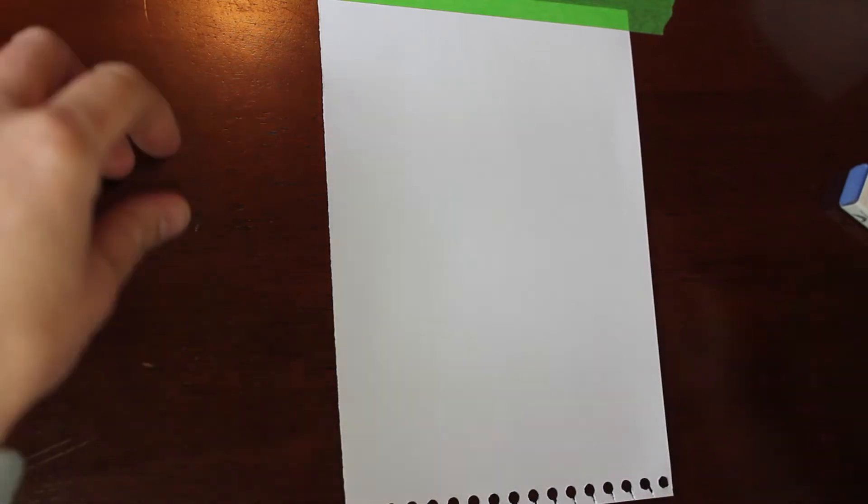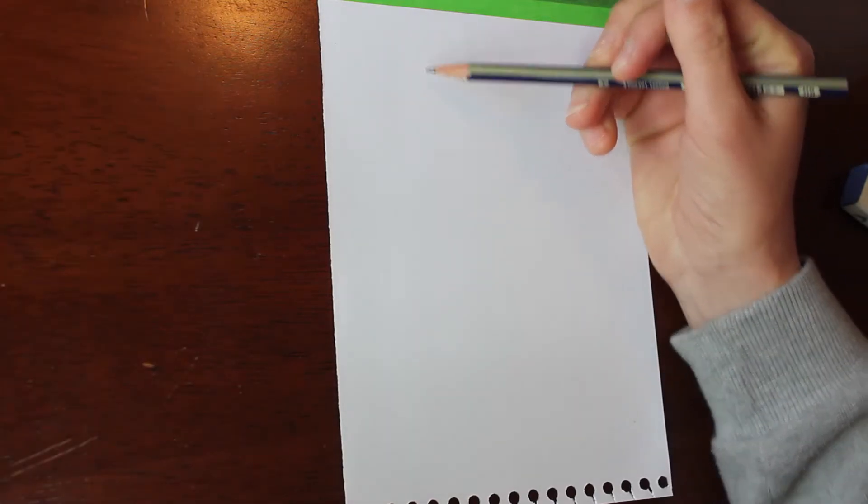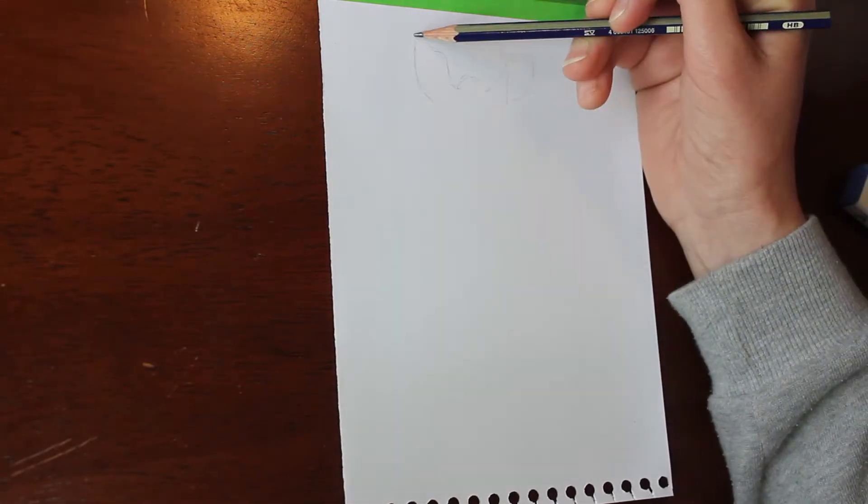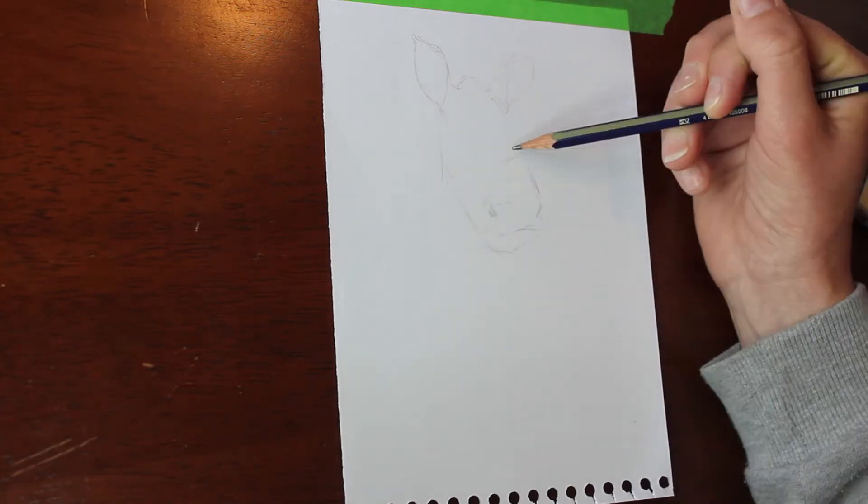G'day everyone, welcome to Brushes with Bec. Today's video is a how-to video where I'm going to show you five different ways how to transfer a sketch onto a piece of paper where you want to do a finished piece on.